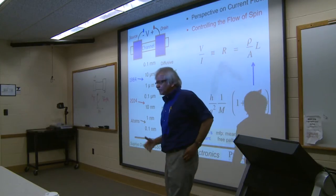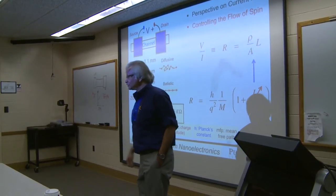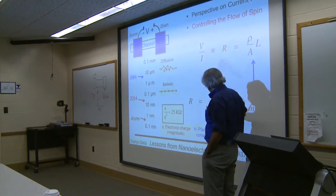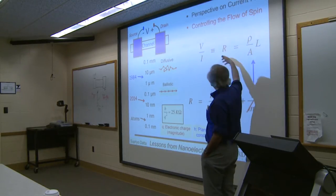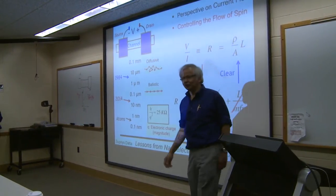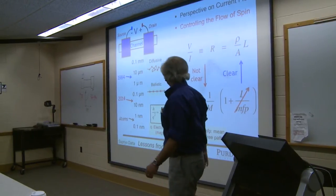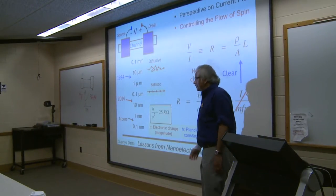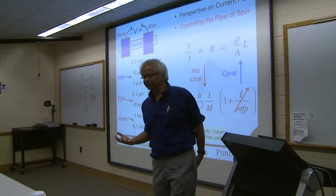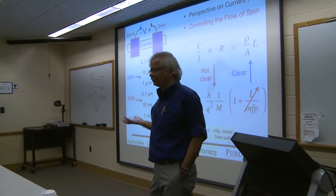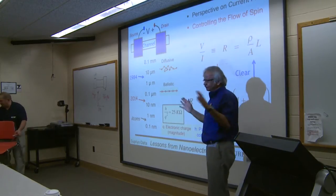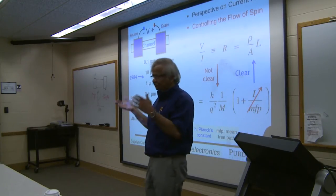Although Ohm's law and ballistic conductance look totally different, you can actually connect the two. If you have a long conductor where electrons travel in a random walk, you define a mean free path; the channel length divided by the mean free path describes the long conductor. Drop that term and you get Ohm's law; shorten the conductor and you get back the ballistic result — a nice clean picture.